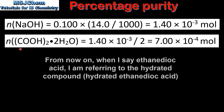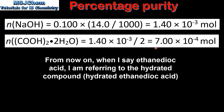The second step is to calculate the amount in moles of ethanedioic acid that reacts with the sodium hydroxide. The molar ratio of ethanedioic acid to sodium hydroxide is 1 to 2, so we divide the amount in moles of sodium hydroxide by 2, which gives us 7.00 × 10⁻⁴ moles.